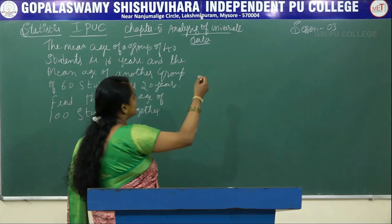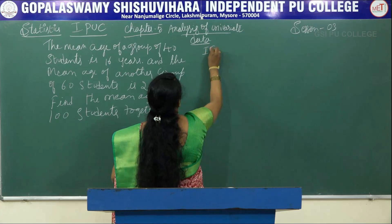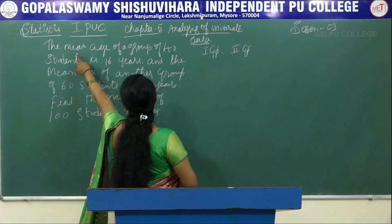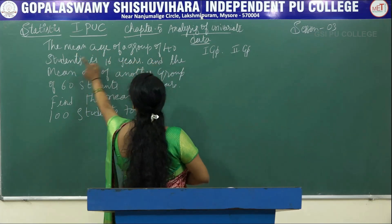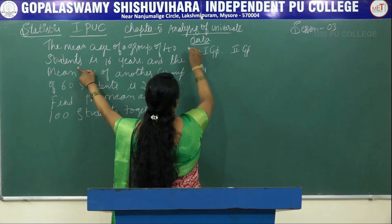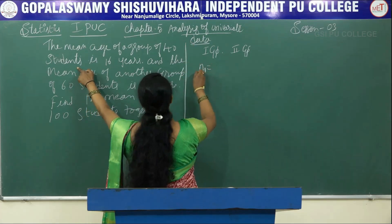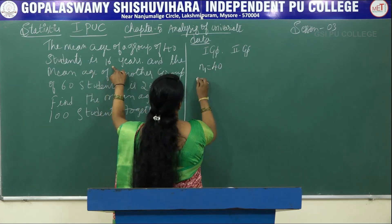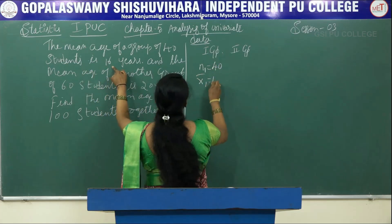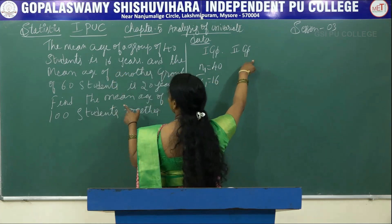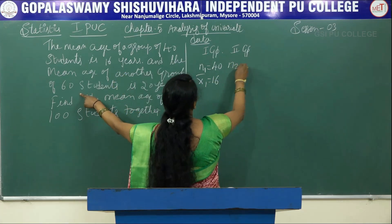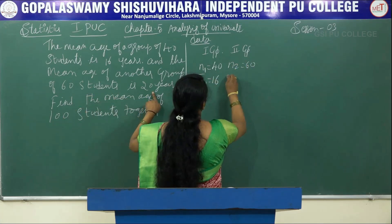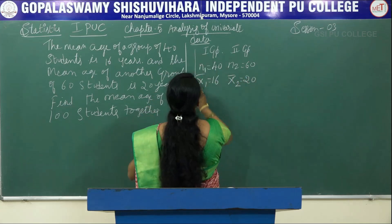Let's look at the data given. For the first group, the number of students n1 is 40, and the mean x̄₁ is 16 years. For the second group, n2 is 60 students and the mean x̄₂ is 20 years. We have to calculate the combined mean of all 100 students.